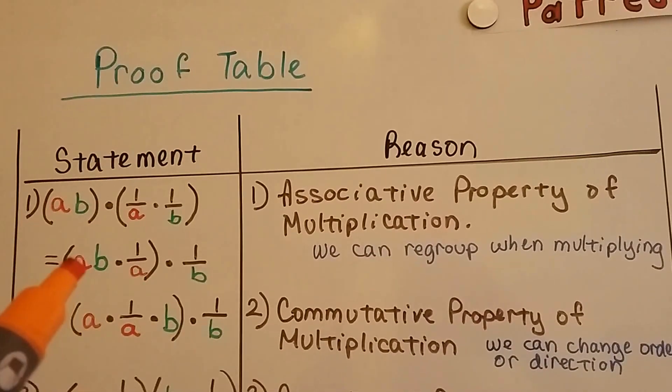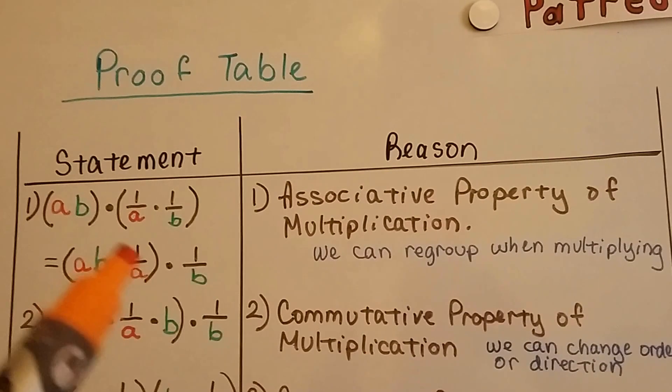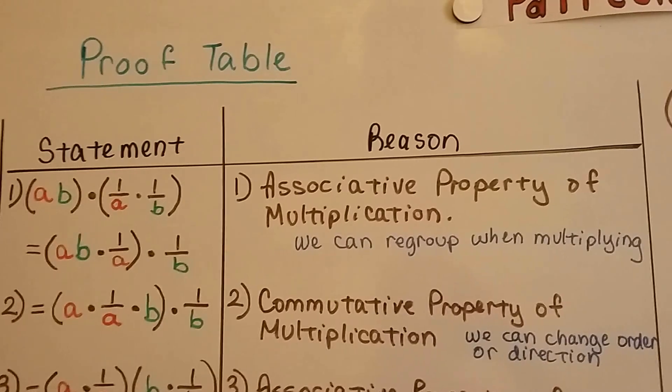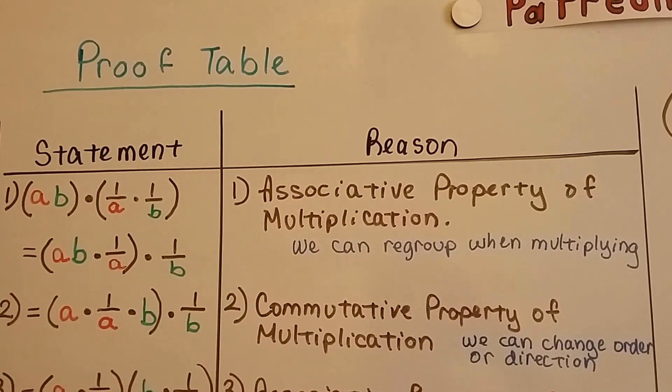We can regroup this so ab times 1 over a is in parentheses and then the 1 over b is outside the parentheses. They're going to equal each other because the associative property says we can regroup.